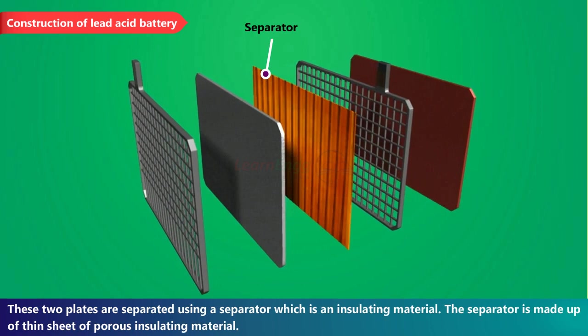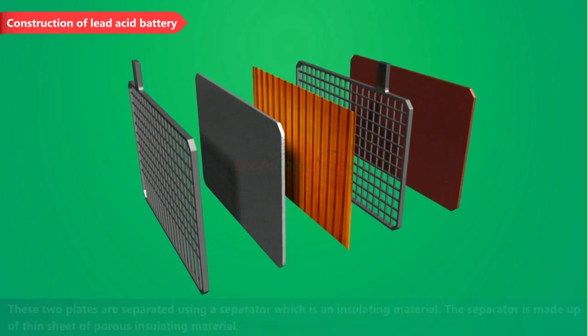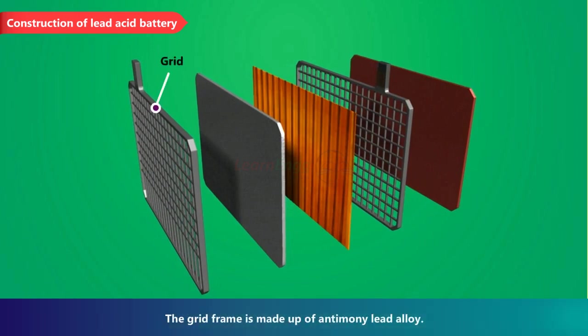These two plates are separated using a separator which is an insulating material. The separator is made up of thin sheet of porous insulating material. Grid. The grid frame is made up of antimony lead alloy.